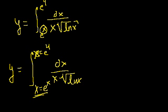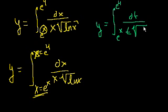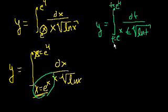A correct way to construct this problem — green for correct — it should have been written something like: y is equal to the integral from e to the x to e to the fourth. Instead of using x, you could use any other variable, like t. So it becomes the integral of dt over t times the square root of the natural log of t. Now you don't run into this problem, because the function is defined in terms of t, and the boundaries are t equals e to the x to t equals e to the fourth. This was pointed out by CognitoEgoSum, and it was a good thing to point out.